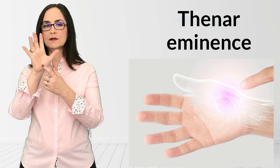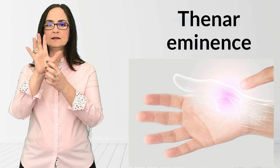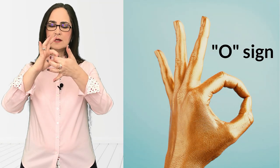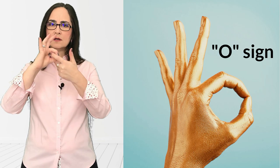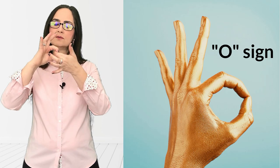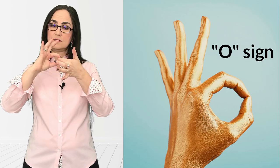One of the signs that the muscles are getting weaker is atrophy of this part, the thenar eminence, this area of the hand, and the person will notice weakness to do a movement like an O. This is usually very strong, but when they have advanced median nerve damage, they will not be able to hold this O very strong.